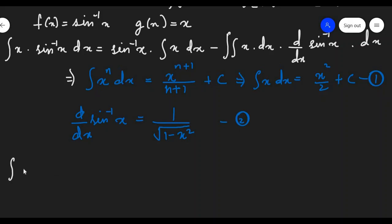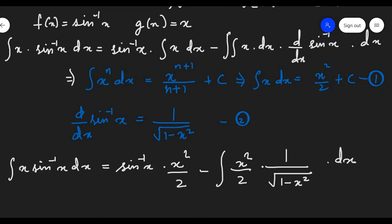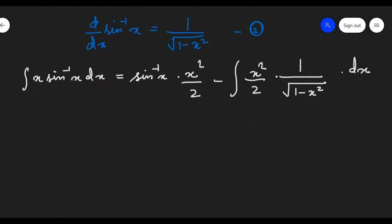Let us put these two values — result 1 and result 2 — into the equation and proceed solving further. So you get integration of x times sine inverse of x as: sine inverse of x times x squared by 2, minus integration of x squared by 2 times 1 upon square root of 1 minus x squared, dx.